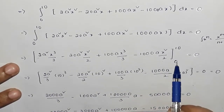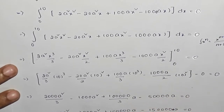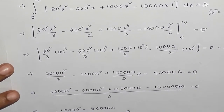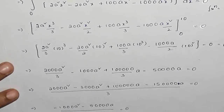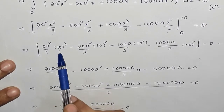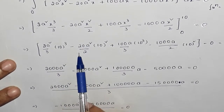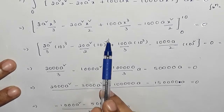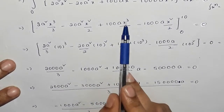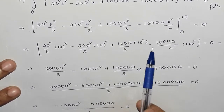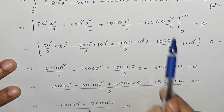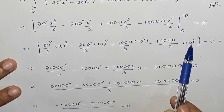Now we apply limits from 0 to 10. Substituting x = 10: we get 2a · (10 cubed)/3, minus 20a · (10 squared)/2, plus 100a · 10/3. The lower limit x = 0 gives zero for all terms, so we subtract 0.